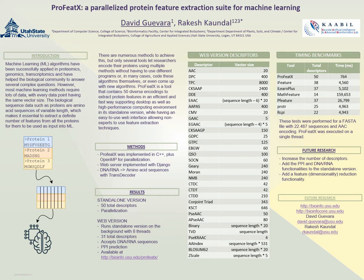We compiled 50 different descriptors or algorithms, which are available in the standalone version. We also developed a web version, which lets users access 31 out of the 50 descriptors — the other 19 require additional files. The tool supports not only sequence encoding but also protein-protein interactions, and it accepts DNA or RNA sequences. The web page uses Transdecoder to find coding regions and then encodes the proteins found.